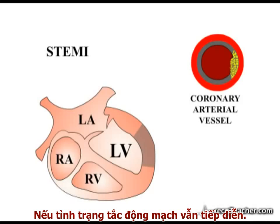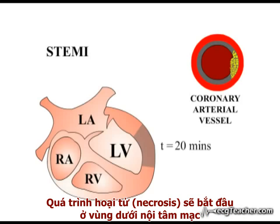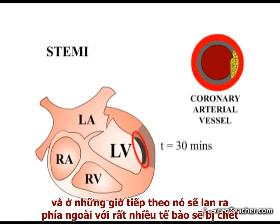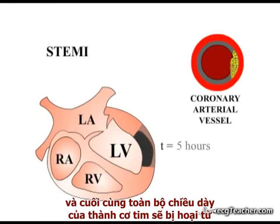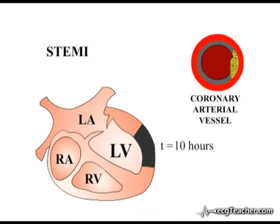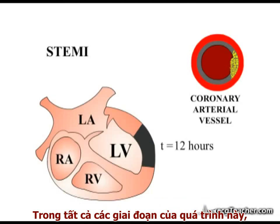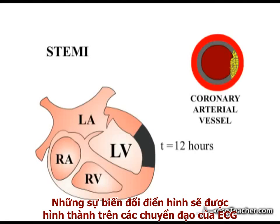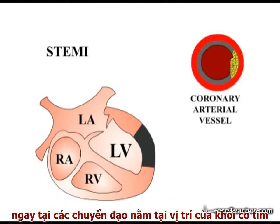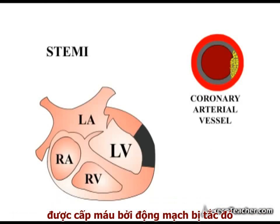If the blockage of the arterial lumen persists, necrosis begins in the subendocardial region and in the subsequent hours spreads outwards in a wave of cell death which may ultimately involve the full thickness of that region of the myocardial wall. At all stages of this process, characteristic changes are produced in the ECG leads directly overlying the region of myocardium that the occluded vessel supplies.